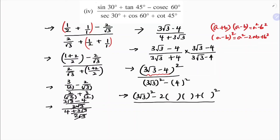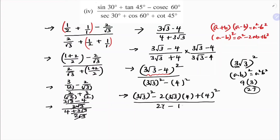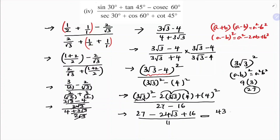Expanding (3√3 - 4)²: here a = 3√3 and b = 4. So a² = (3√3)² = 9 × 3 = 27, and b² = 16. The middle term is 2ab = 2 × 3√3 × 4 = 24√3. So the numerator is 27 - 24√3 + 16 = 43 - 24√3. The denominator is 27 - 16 = 11. Therefore the final answer is (43 - 24√3) / 11.